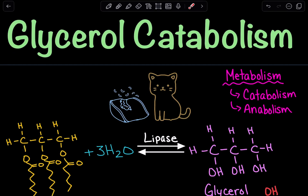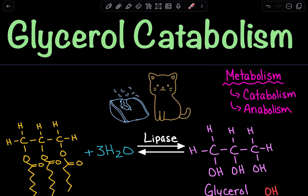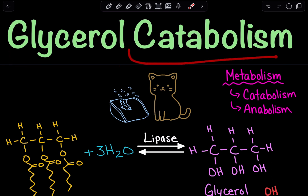Here we're going to go over glycerol catabolism. Glycerol is a structure that is found within lipids, and catabolism is the process of breaking something down.